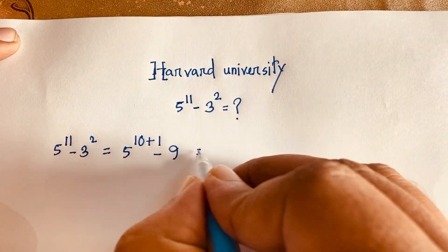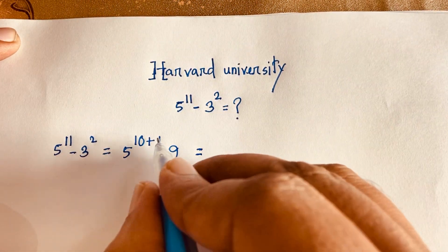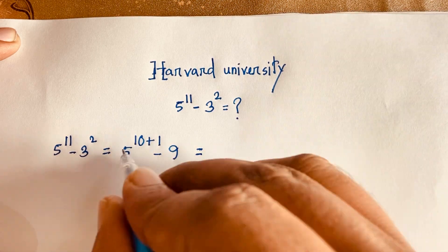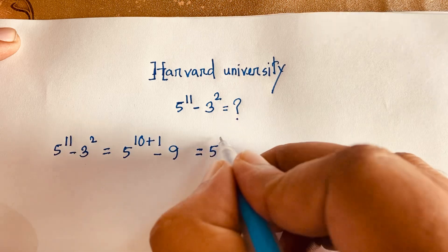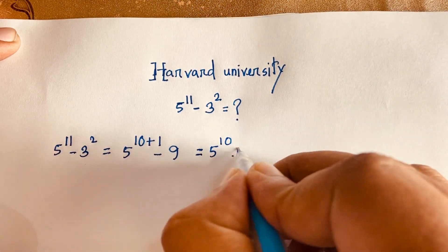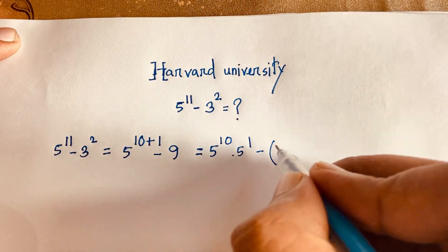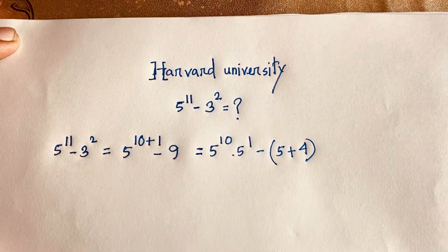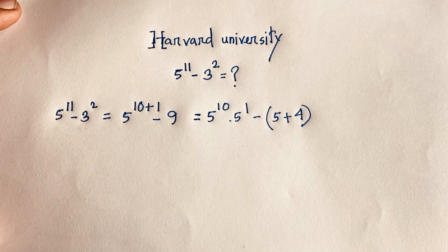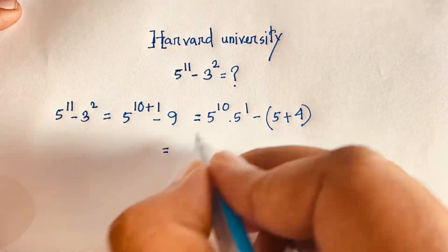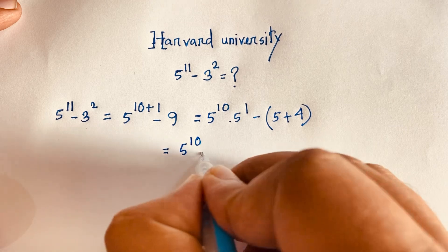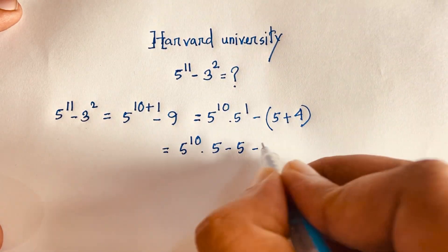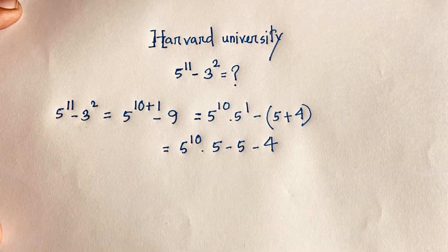Now we know the exponential law: a to the power (n+m) equals a to the power n times a to the power m. According to this law, 5 to the power 11 becomes 5 to the power 10 times 5 to the power 1. And 9 can be written as 5 plus 4. So the expression becomes 5 to the power 10 times 5, minus 5, minus 4.